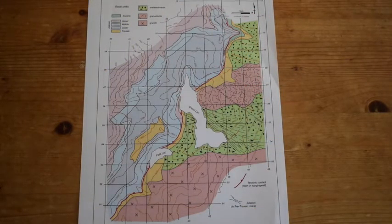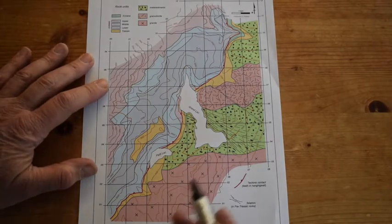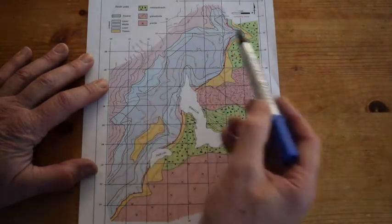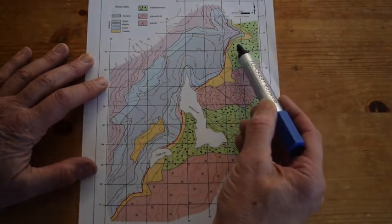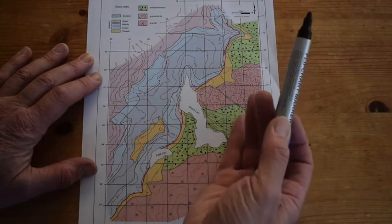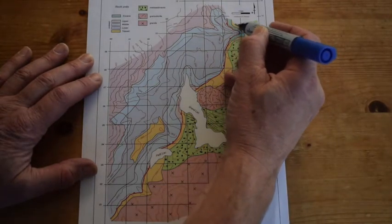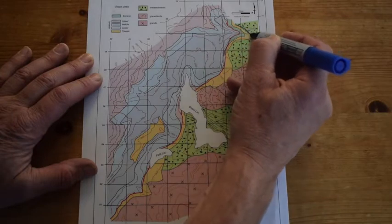So here's the geological map and let's just pick out the unconformity which we can see coming across here at the base of the Triassic rocks. They overstep a whole series of different rocks over here on the southeast side of the map, so let's just draw it on so you know what we're talking about.